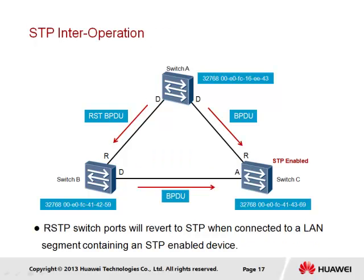Where a spanning tree topology contains a mix of RSTP-enabled switches as well as switches still supporting STP, some level of compatibility is possible. This is achieved by the RSTP-enabled switch automatically rolling back to the more traditional form of STP. However, in doing so, the switch is again subjected to the effects of STP, including the timer periods that may result in extended downtime while the network converges. It is therefore recommended that a network supporting RSTP not contain any STP-enabled switches.